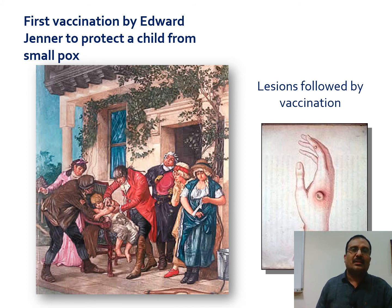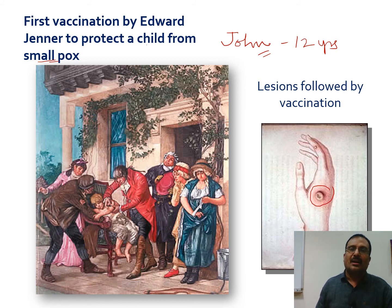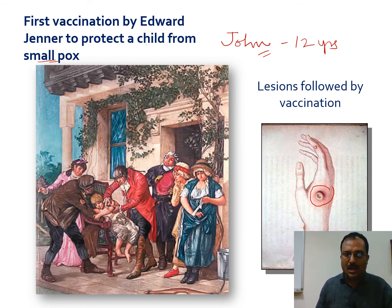Edward Jenner administered the first vaccination to a 12-year-old boy named John. He observed lesions at the vaccination site, and this active lesion stimulated the immune system to produce antibodies against smallpox. In that way, Jenner discovered the vaccine for smallpox.